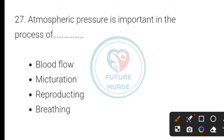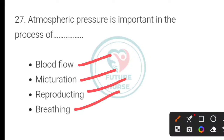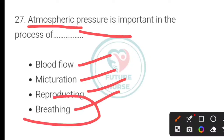Next question: atmospheric pressure is important in the process of which of the following? Options: blood flow, maturation, reproducing, or breathing. The atmospheric pressure is important in the process of breathing.